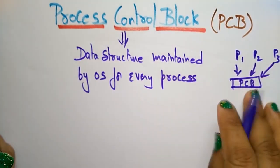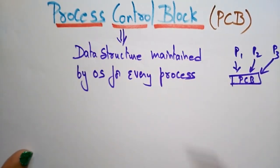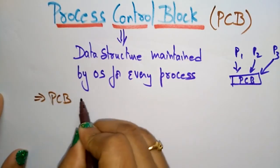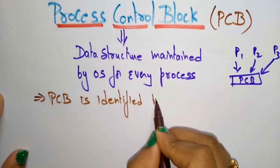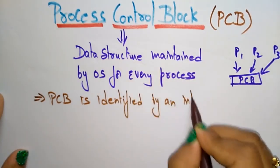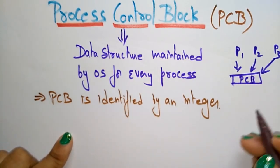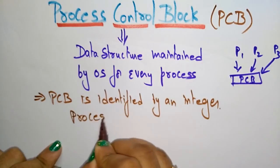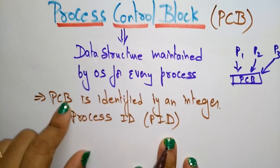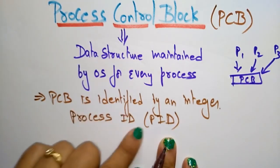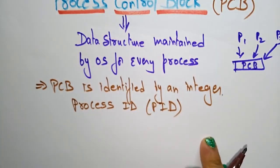Each process's information will be stored in the Process Control Block with their ID. The PCB is identified by an integer called the Process ID, or PID. This tells us which process it is — P1, P2, P3, and so on.